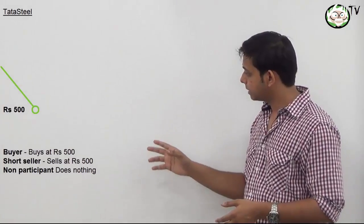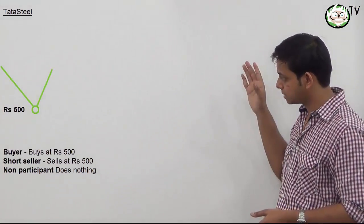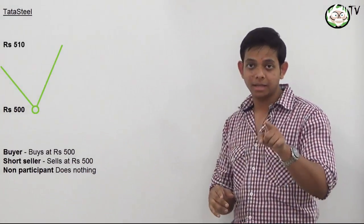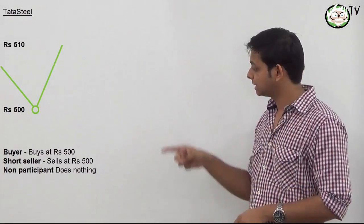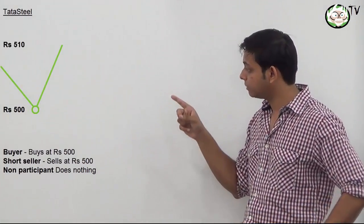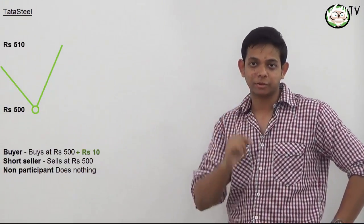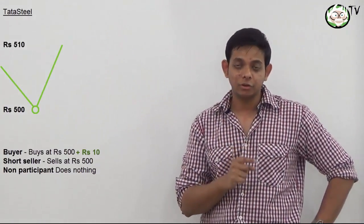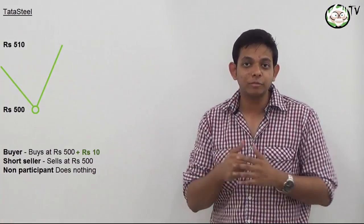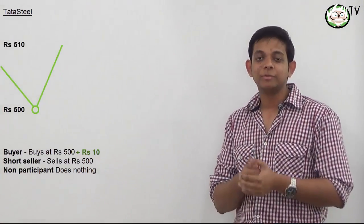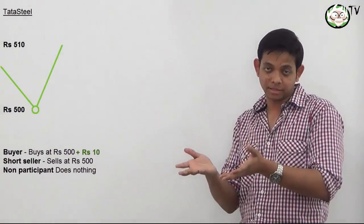What happens is that markets rise. Now remember, the buyer is going to be making a profit. Tata Steel has now rallied to Rs. 510, making the buyer a clean Rs. 10 profit. He is, however, greedy and thinking he should have bought more shares to make a better amount of profit.